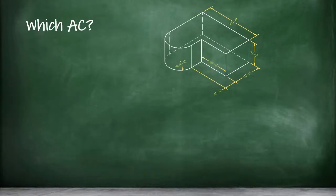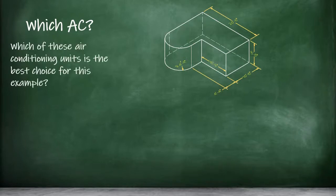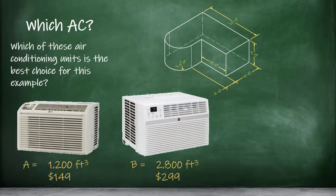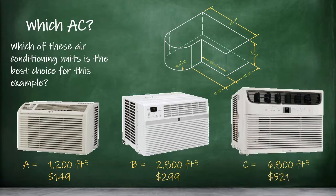Now that we know the volume of the space we're trying to cool, which of these air conditioning units is the best choice for this example? A, which can cool up to 1,200 cubic feet for $149. B, which can cool up to 2,800 cubic feet for $299. Or C, which can cool up to 6,800 cubic feet for $521.